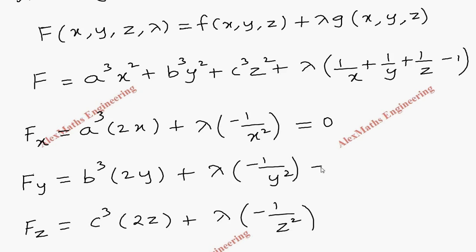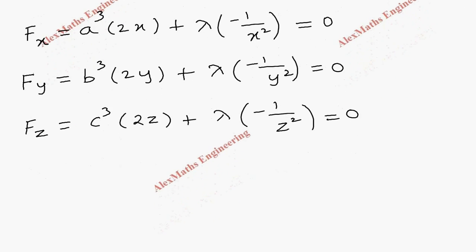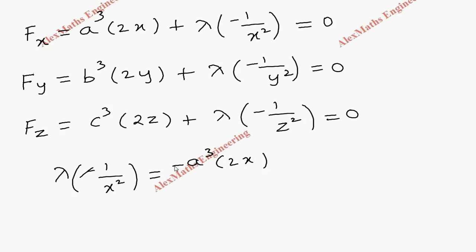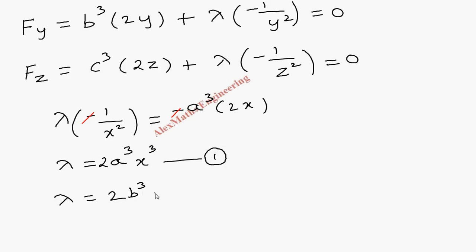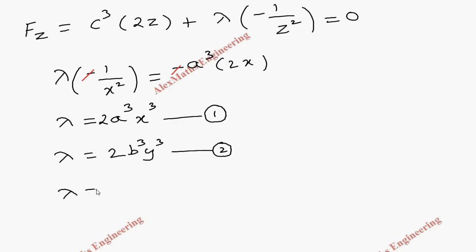As per the working procedure, we equate each partial derivative to zero and solve for λ. From ∂F/∂x = 0, we get λ = 2a³x³. From ∂F/∂y = 0, we get λ = 2b³y³. From ∂F/∂z = 0, we get λ = 2c³z³. So we have three expressions for λ.